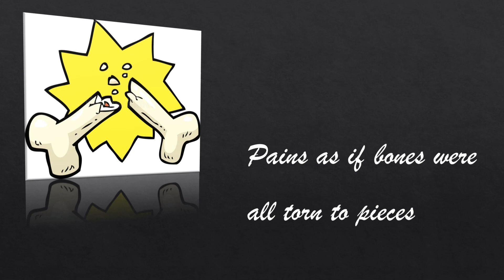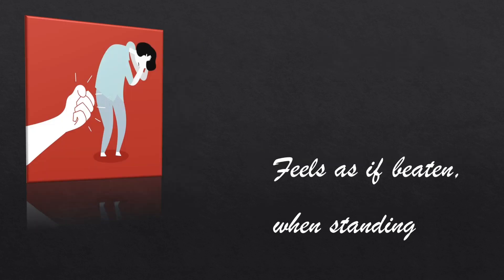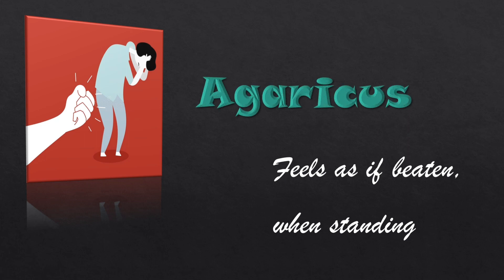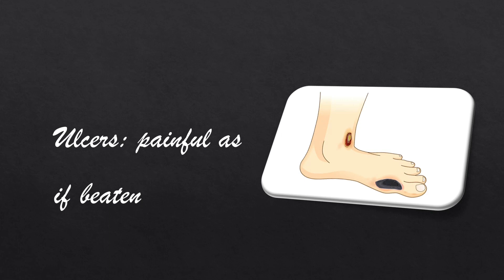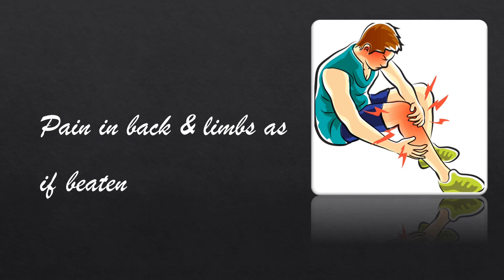In the case of pains as if bones were all torn to pieces — that is Paeonia. When standing, feels as if beaten — that is Agaricus. Second symptom: ulcers painful as if beaten — this is Calendula. Ulcers as if beaten is in Calendula. Next symptom: pain in back and limbs as if beaten — this is Phosphoric acid. Back and limbs is mentioned as the location, so that is Phosphoric acid.